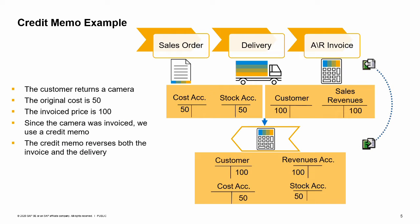In our business example, the customer is disappointed in the performance of the camera they ordered, so they have decided to return the camera. Our item cost for the camera was 50 and the camera was invoiced at the price of 100. Since the camera had already been invoiced, we had to use a credit memo to process the return. The AR Credit Memo reverses both the invoice posting and the delivery posting.